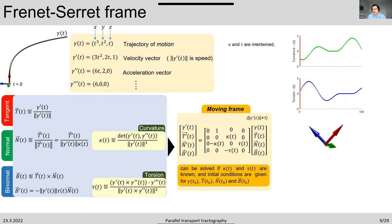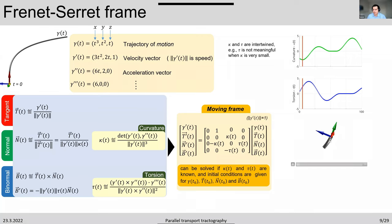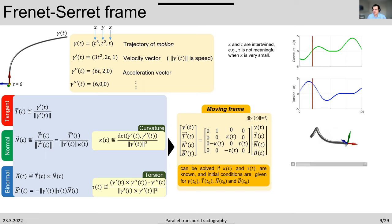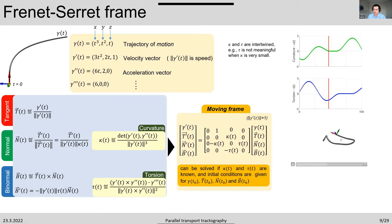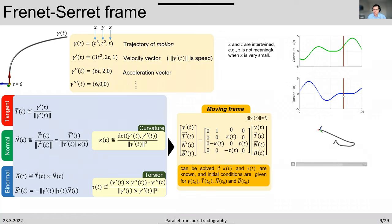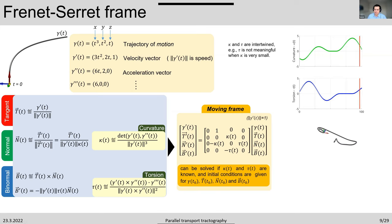An important point is that curvature and torsion are intertwined in the Frenet-Serret frame. Torsion is not very meaningful when curvature is very small — there is no bending in the binormal direction when curvature is very low. Zero torsion is meaningful: with non-zero curvature and zero torsion, the curve bends in the same plane without changing it. Overall, the Frenet-Serret frame provides a nice framework for modeling smooth curves when you understand its mechanics.